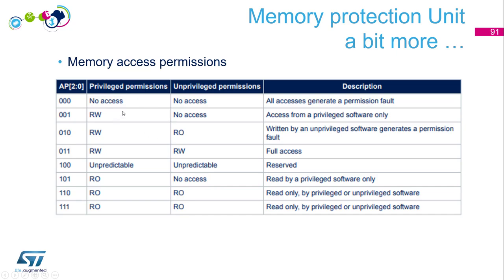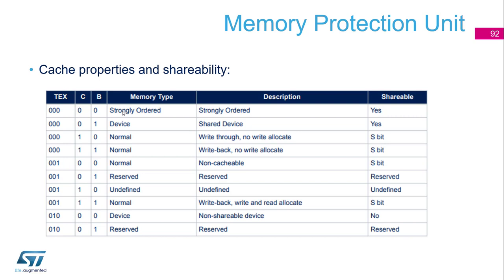Memory access permissions are defined for both privileged and unprivileged execution — you can set no access, read-only, or read-write. Cache properties and shareability are a bit more complex. There are three memory types: normal, device, or strongly ordered. In normal mode, loads and stores are not necessarily performed by the CPU in the order listed in your program — the core may rearrange them slightly, which can sometimes be an issue.